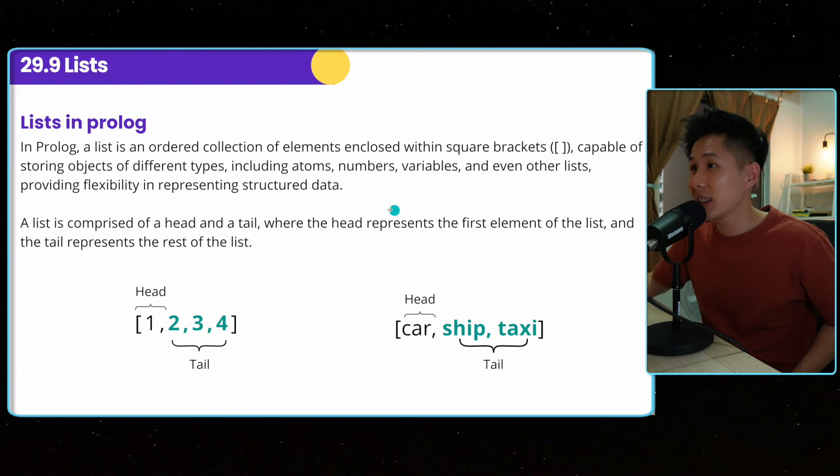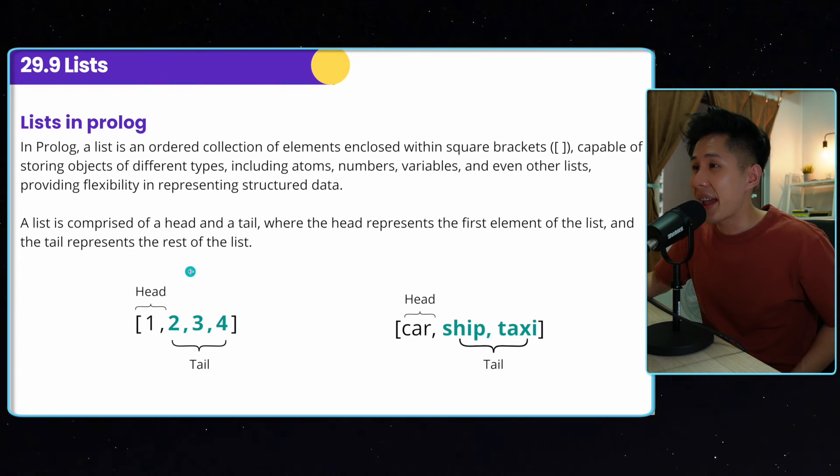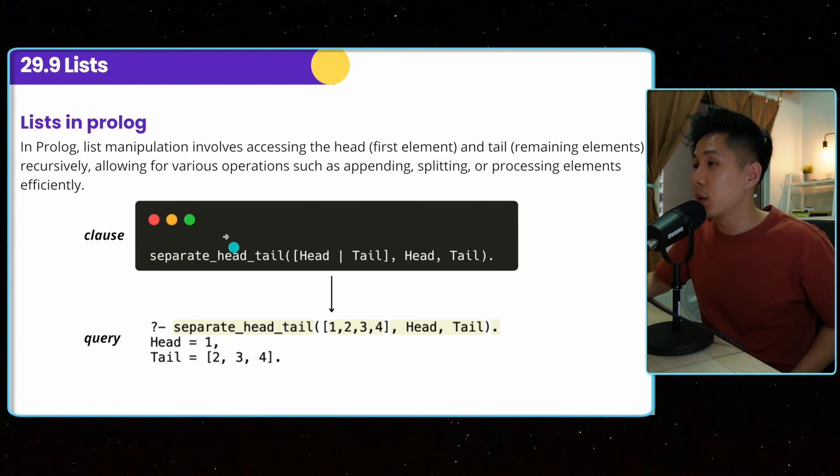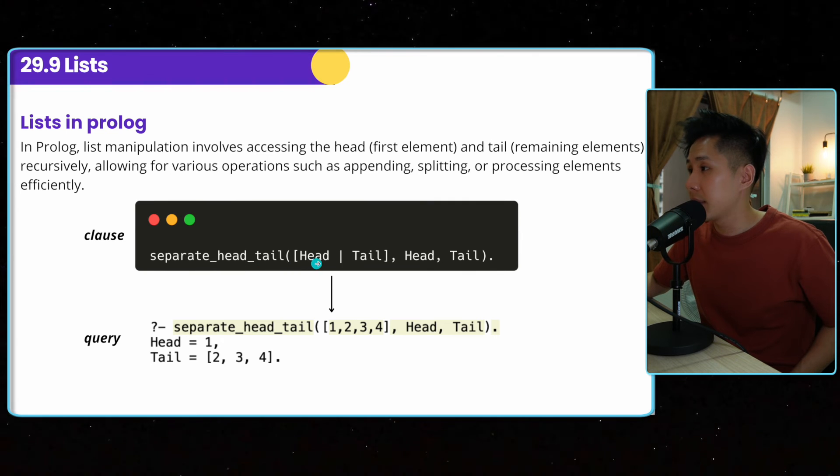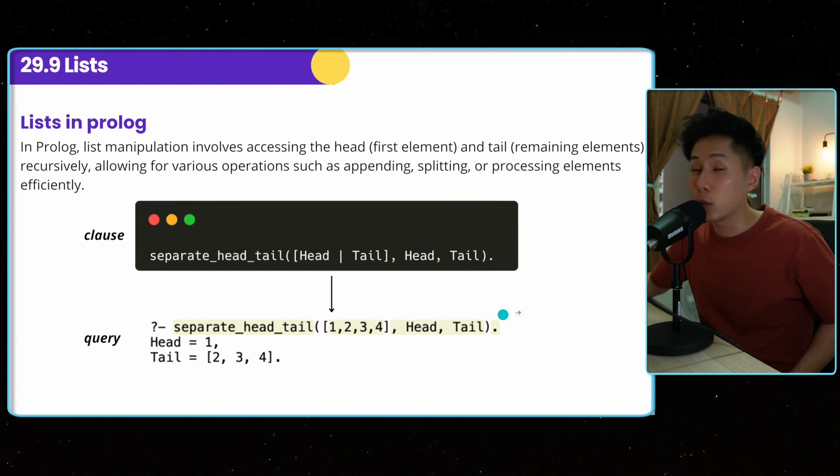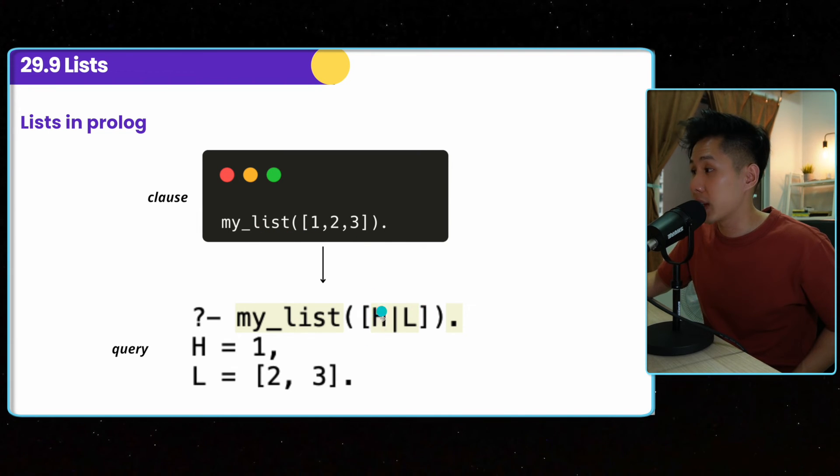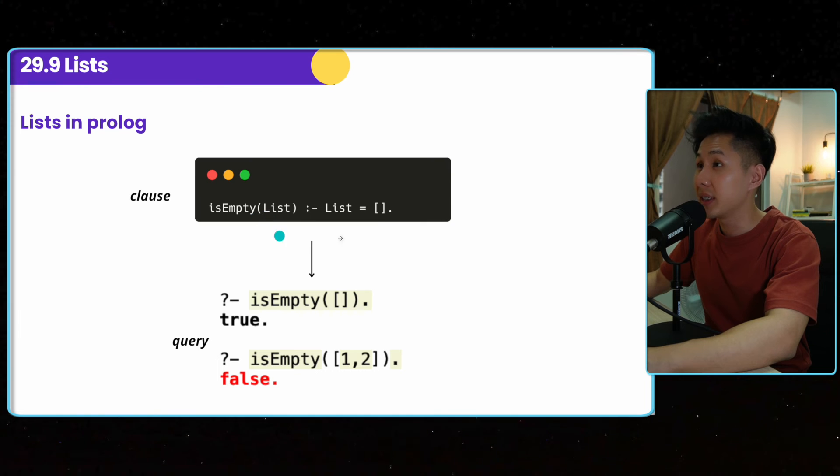Next up, let's proceed to lists in Prolog. A list is an ordered collection of elements enclosed within square brackets, capable of storing objects of different types, including atoms, numbers, variables. So you can put numbers or a string. And a list is comprised of a head and tail, where the head represents the first element and the tail represents the rest of the list. So in this case, I won't run the code again because it's pretty straightforward, only one line. So you can write this separate head of tail. And this indicates that it is a list. You can put a list here. And if you assign head here and tail here, head will be equal to one, tail will be two, three, and four. And that's how Prolog works. Head is always the first item in the list. So similarly, you can also run this clause and do a my list query, square bracket, H and L, represent head and last. And this is what it will give you.